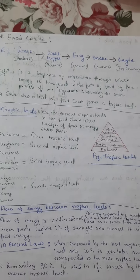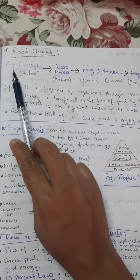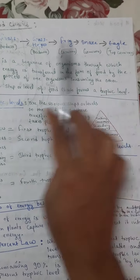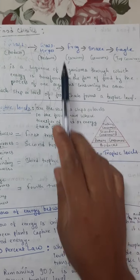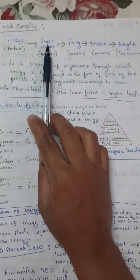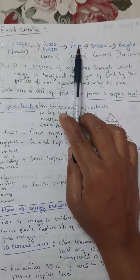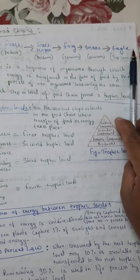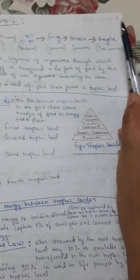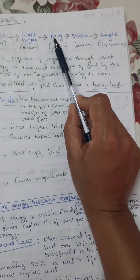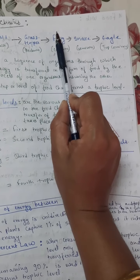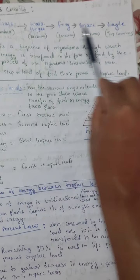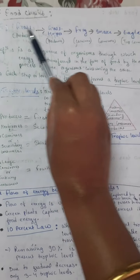Next important term: food chains. First, look at the examples — they are shown by an arrow. Sometimes questions come in examinations to arrange things in a food chain. Here is an example: grass is eaten by grasshopper, grasshopper is eaten by frog, frog is eaten by snake, and snake is eaten by eagle. This forms a chain — that is, a food chain. Grass is the food of grasshopper, grasshopper is the food of frog, frog is the food of snake, and snake is the food of eagle.